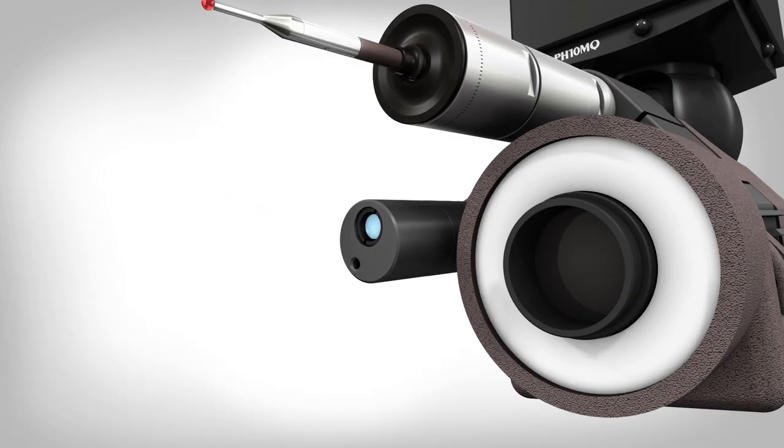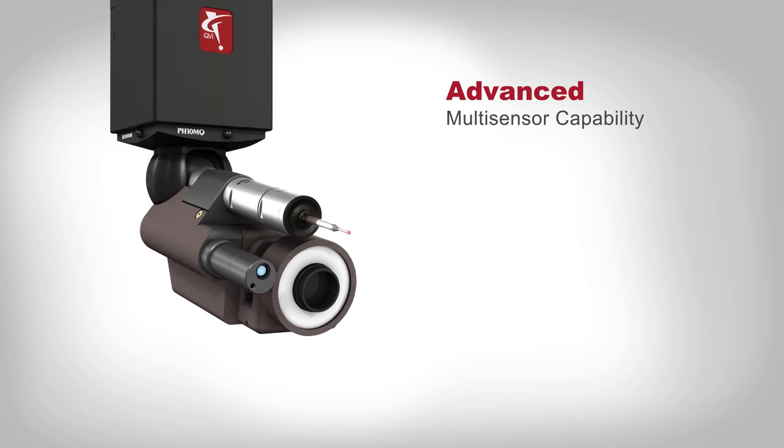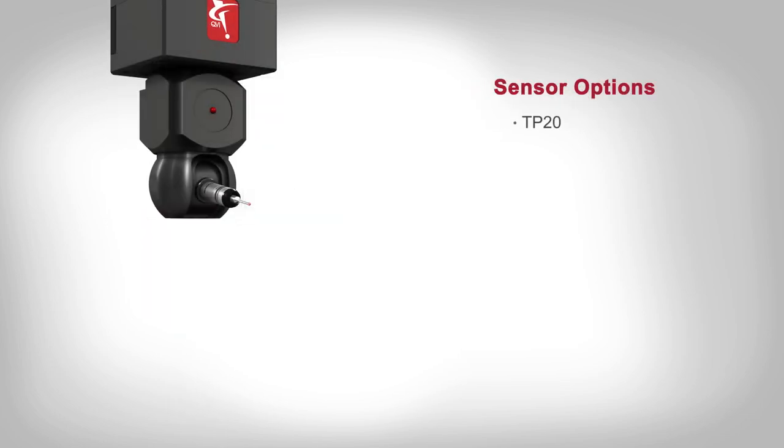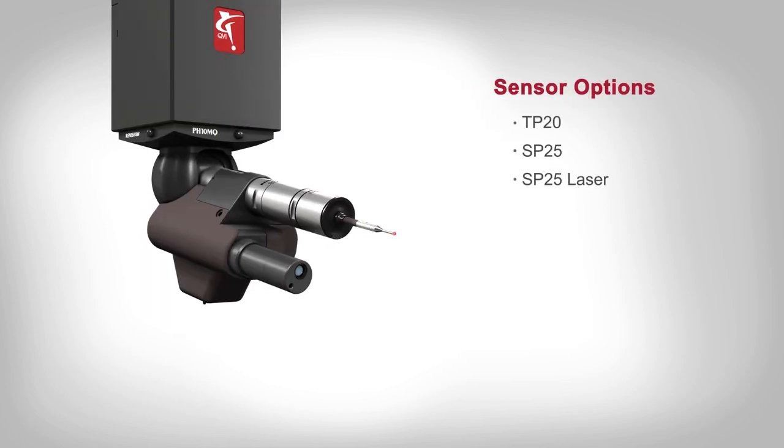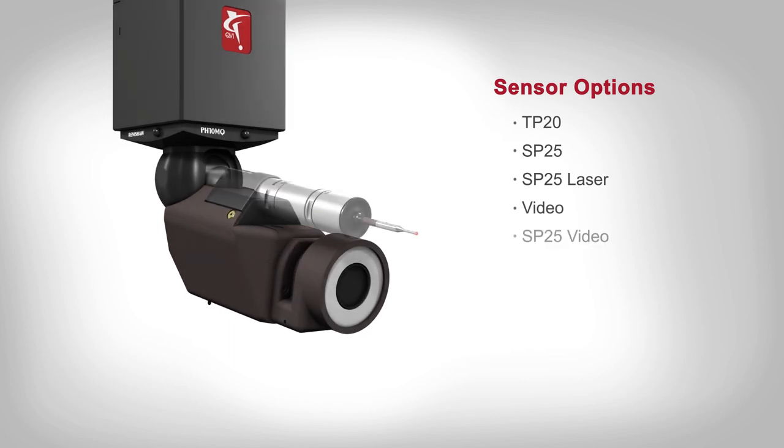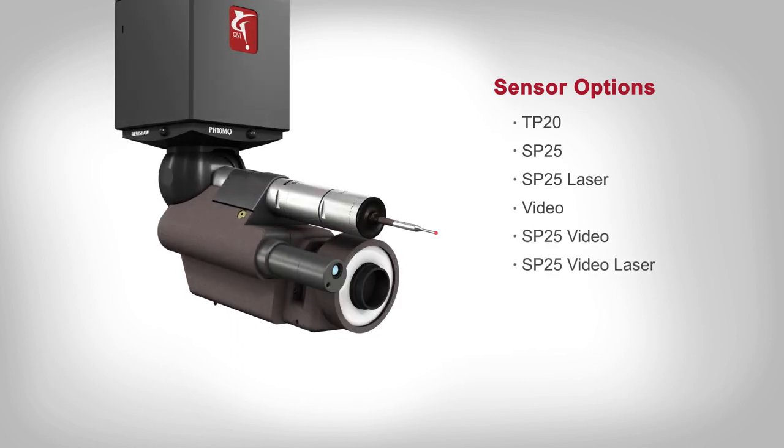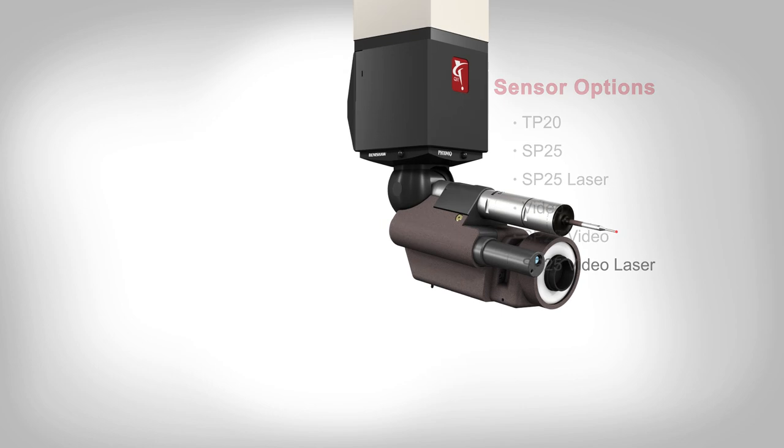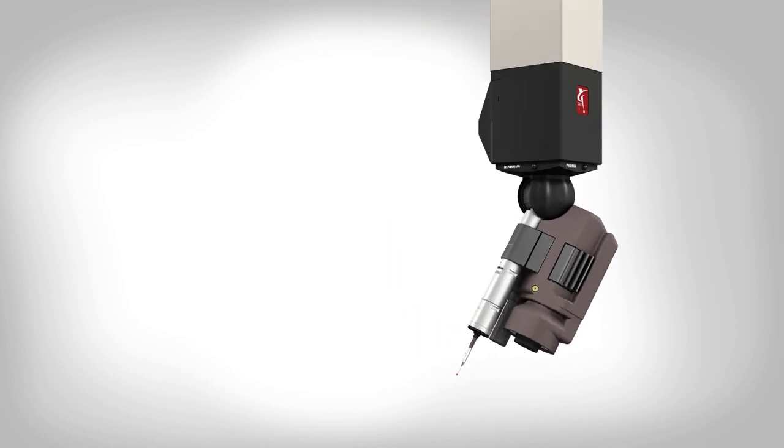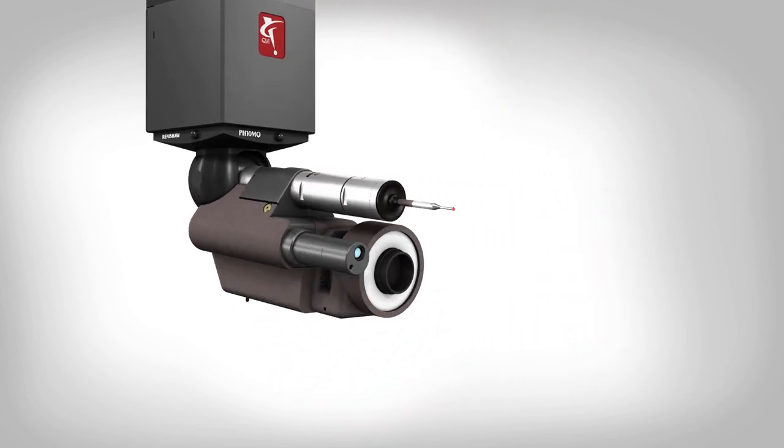Multiple sensors on a single metrology tool allow parts to be measured the way they are made using multiple tools and process steps. FlexPoint systems offer high-performance optical sensor capability on an articulating probe head, perfect for precise measurements of even the smallest features.